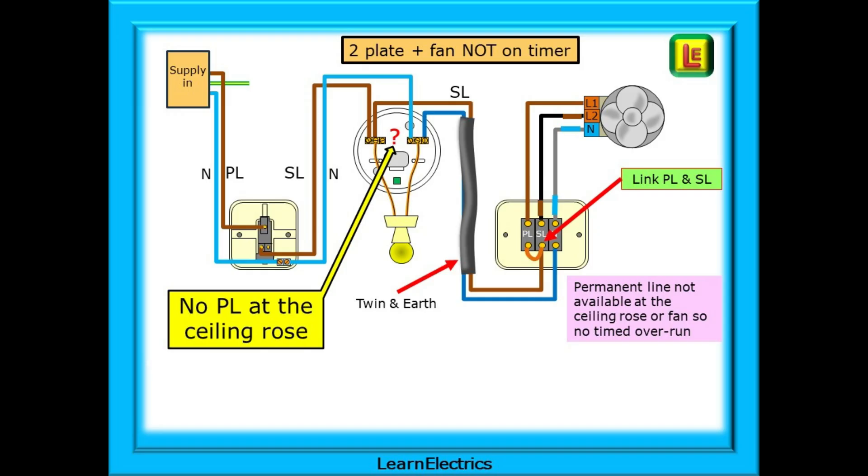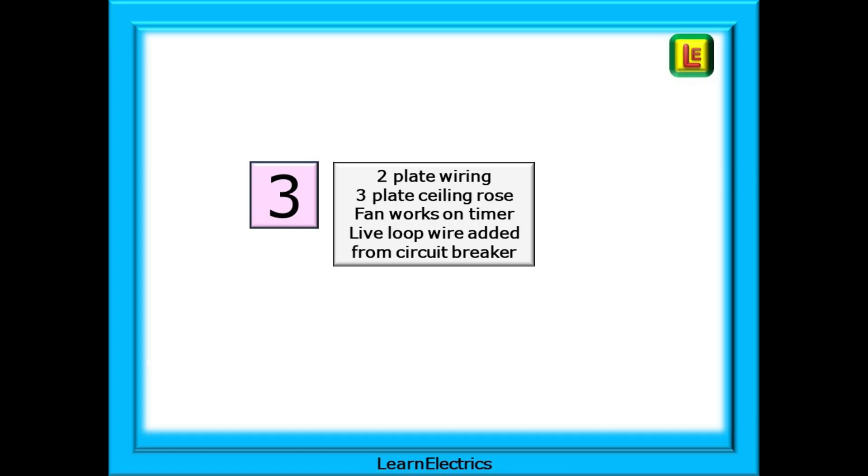There is no permanent line or PL at the ceiling rose. You may come across this with older installations where two plate wiring has been used and now it's difficult to run a permanent line to the newly installed fan. In this case there is only the switched line and neutral available for the fan plus earth of course. To make the fan work we must link the switched line terminal to the permanent line terminal at the isolator switch or link L1 and L2 at the fan. The fan will only operate when the light is turned on. If the circuit had a three plate ceiling rose and we could run a permanent line to it then we could enable overrun of the fan.